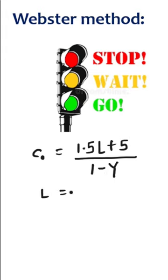L is given by the formula 2N plus R, where R is the all red time and N is the number of phases.